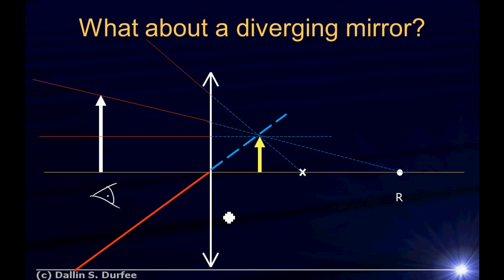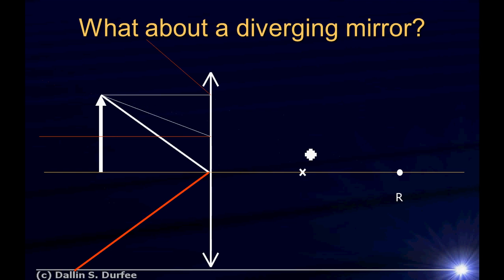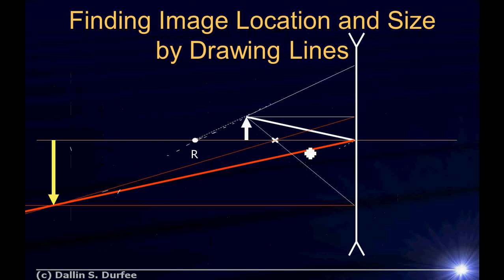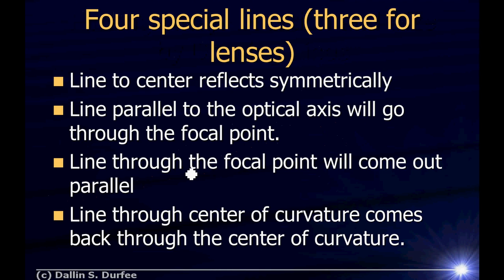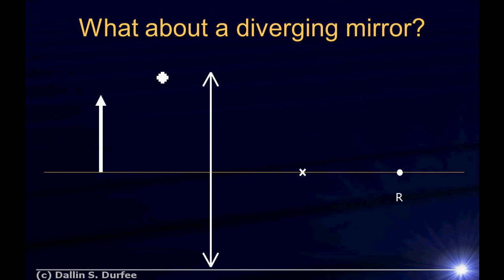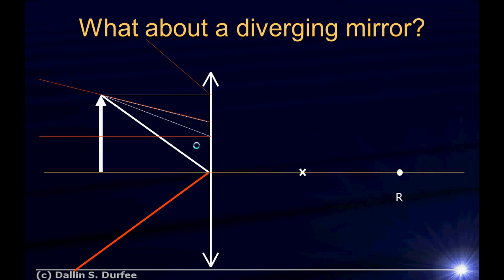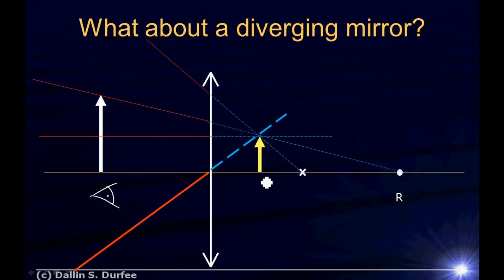That is how you figure out where an image forms, how big it will be, and whether it's upright or inverted. With a converging mirror the image was inverted — negative magnification. With a diverging mirror I get a virtual image that's upright — positive magnification — but looking at the drawing, it appears to be less than one in size.